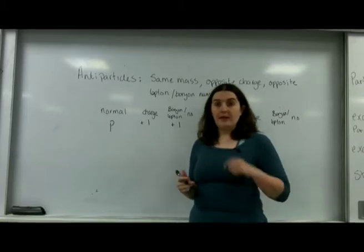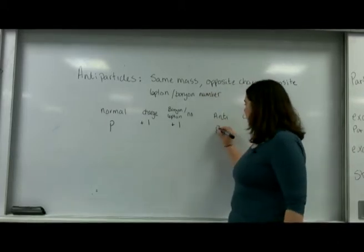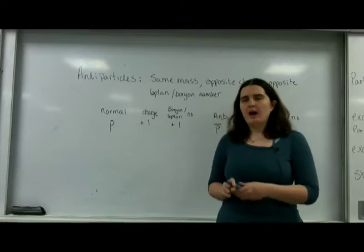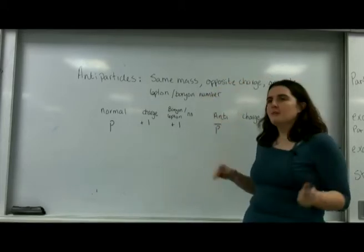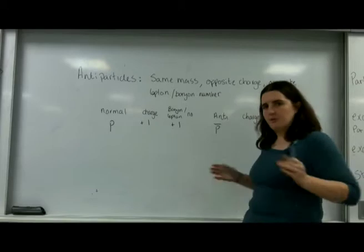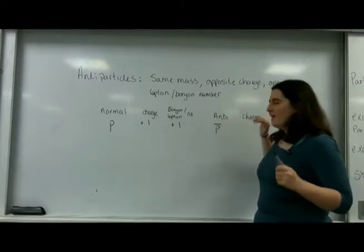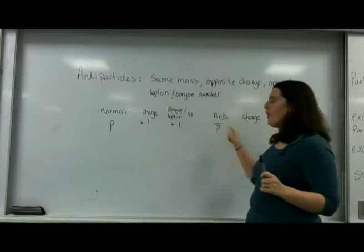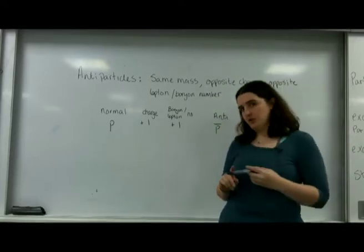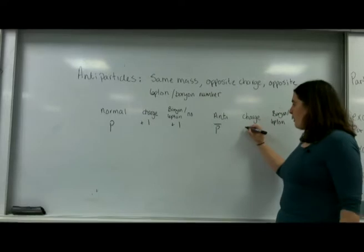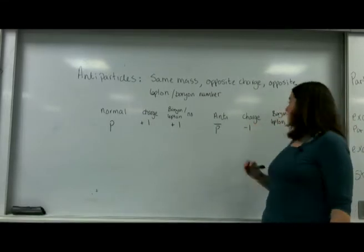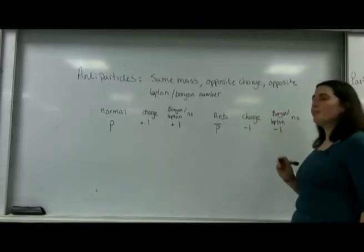Its antiparticle, the antiproton, has a little line above it. I imagine it's like an evil top hat - imagine a person kidnapping the woman, sticking on the train tracks, twiddling their moustache, wearing a top hat. If it's got a line above it, it means it's an antiparticle. It has minus one charge and a minus one baryon number.